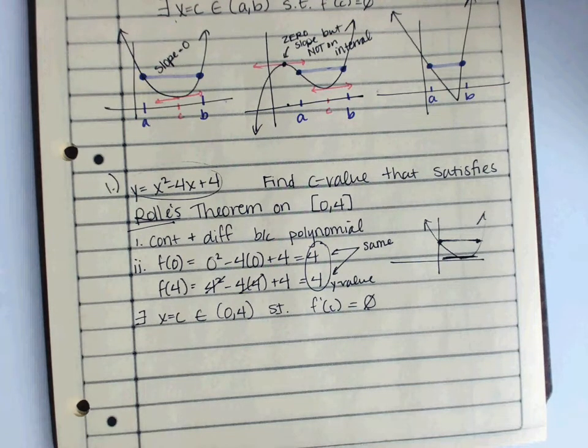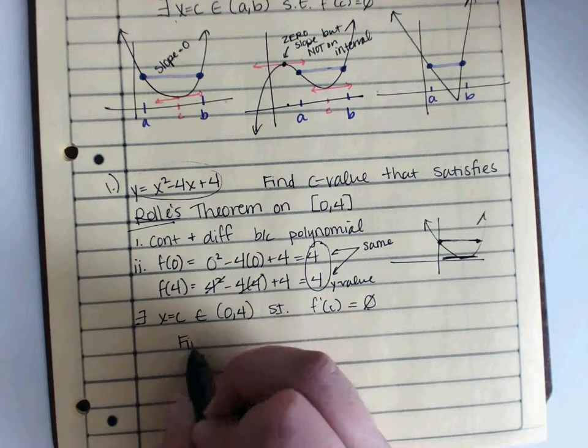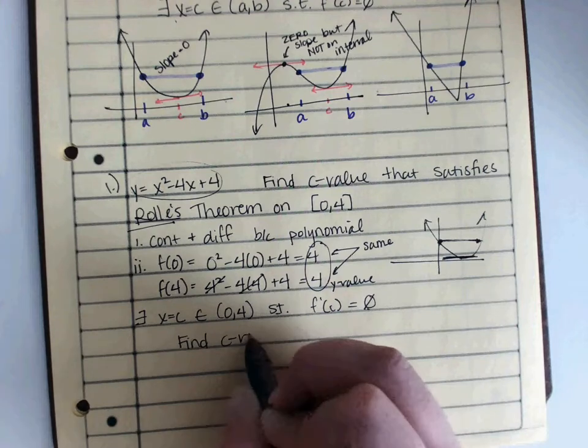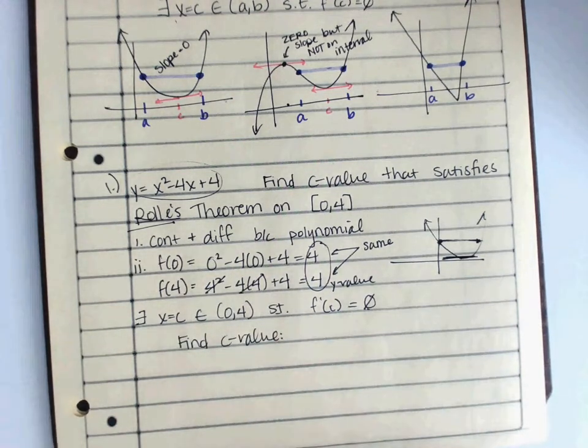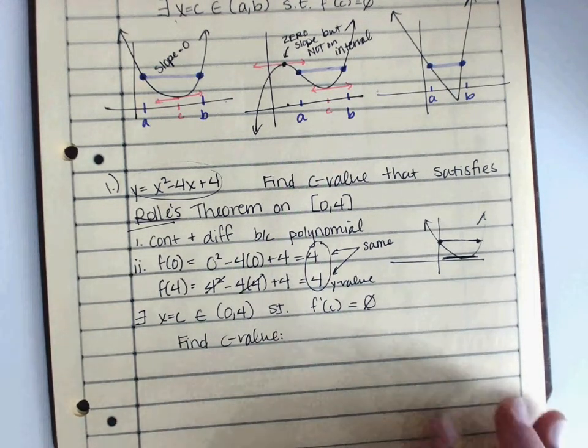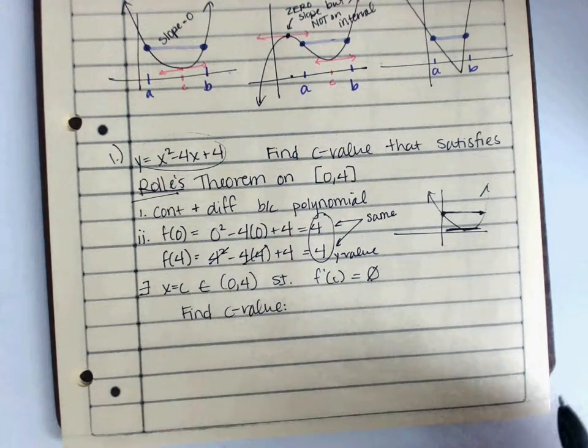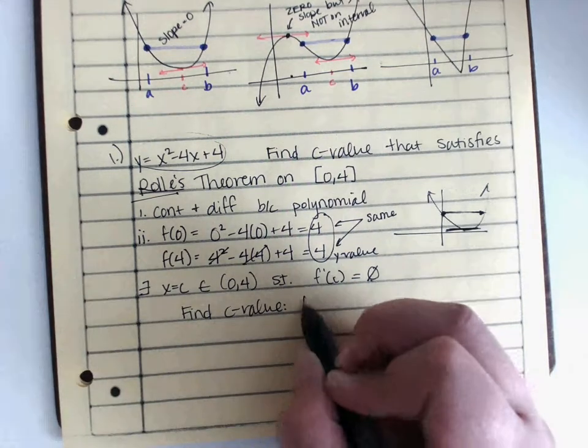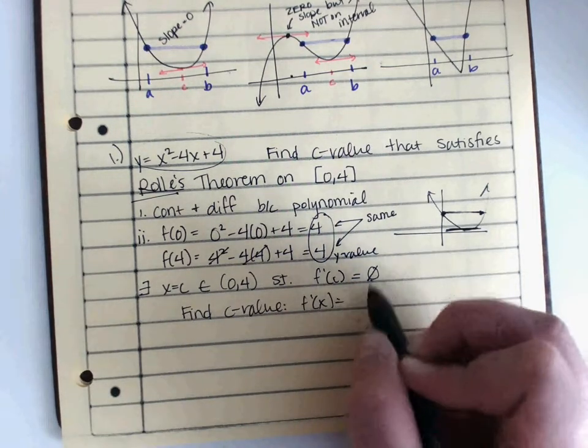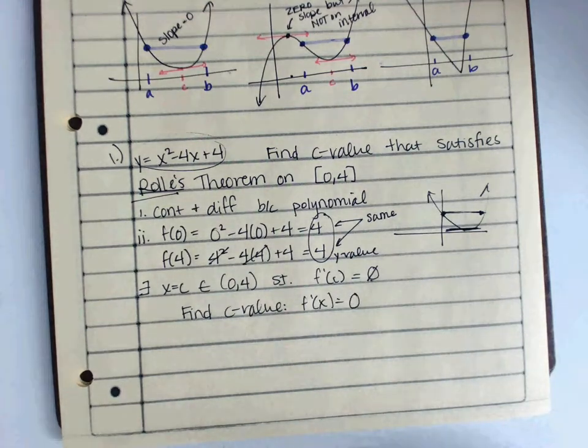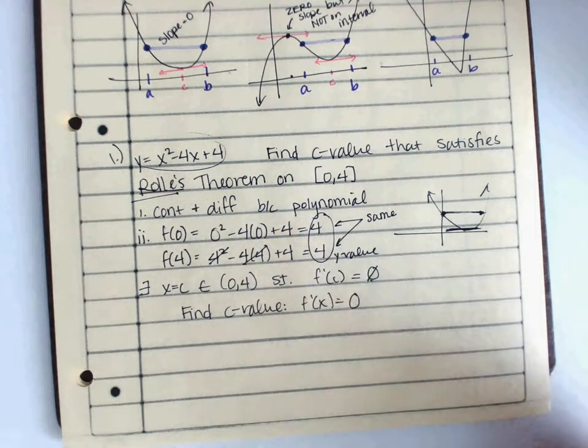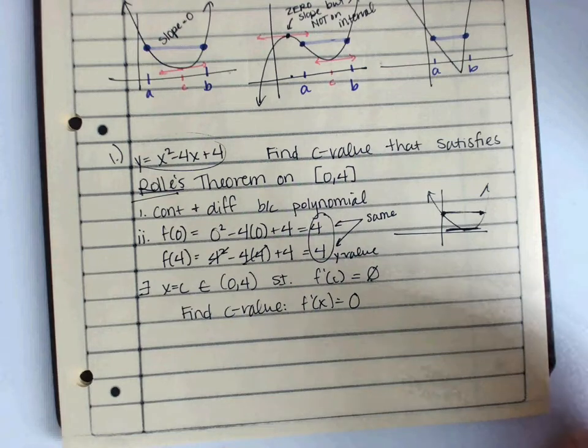Now, remember from there, to find the c. For mean value theorem, I take the derivative, I set it equal to the slope that I want. Nothing different here. I'm going to take the derivative and I'm going to set it equal to a slope of 0. Because since my y values are the same, my secant line would have been flat.